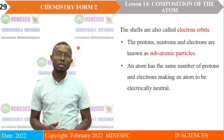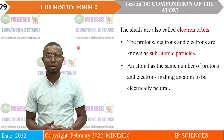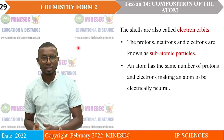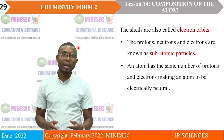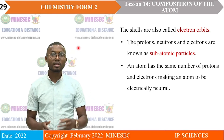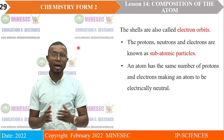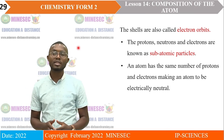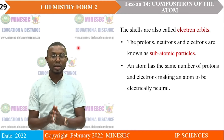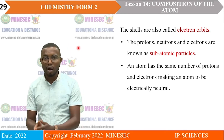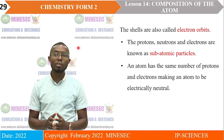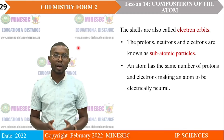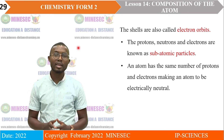Protons, neutrons, and electrons are known as subatomic particles. An atom has the same number of protons and electrons, making an atom electrically neutral. So in an atom, the number of protons is equal to the number of electrons, and that is why an atom is electrically neutral.